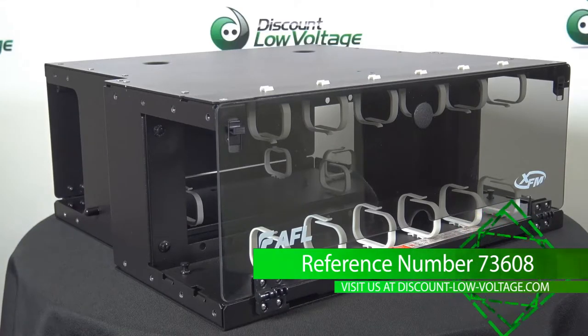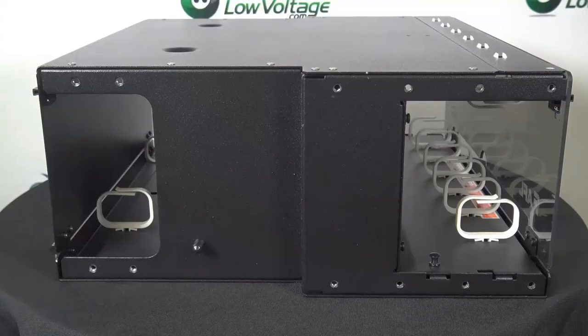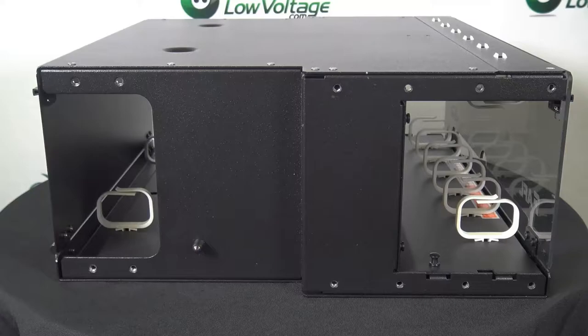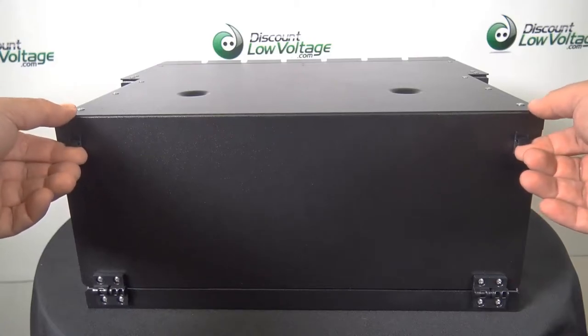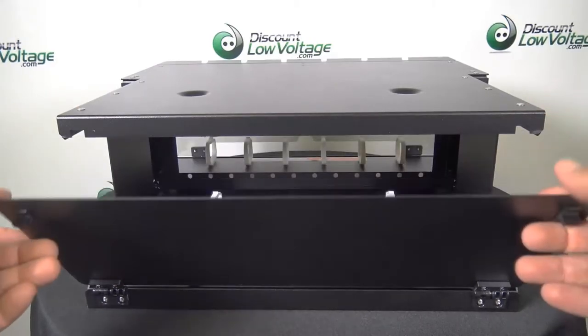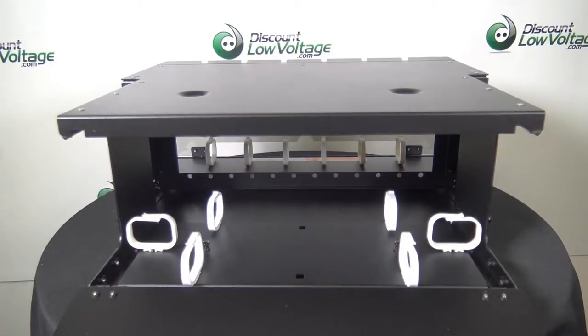Here's a look at the AFL Express Fiber Management 4U patch panel, black, empty. It's AFL model number FM001090-B. This 4 rack space panel is specifically designed to manage dense fiber applications.